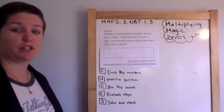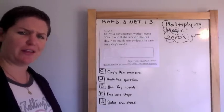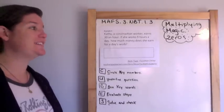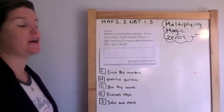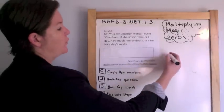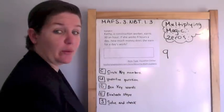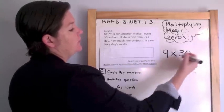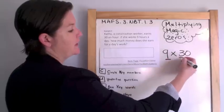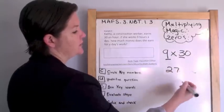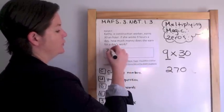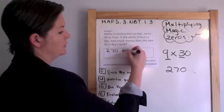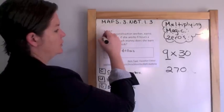Kathy, a construction worker, earns $30 an hour. If she works nine hours a day, how much money does she earn for a day's work? She's working nine hours — that's our group — and she's earning $30 each hour. So here we go with our magic zero math: nine times three is 27, with one zero. $270.